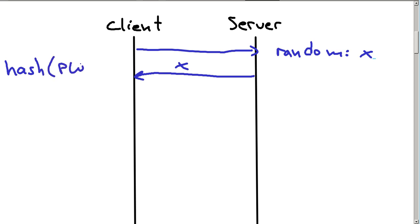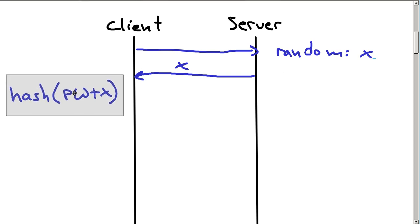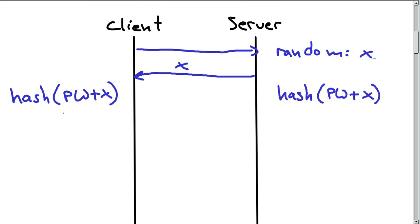Then what the client does is it calculates the hash value of the password plus x. Let's move this a little bit to the bottom here. In the same time, the server actually does the same. Let's say the client's result is y and the server's result is z. The client then sends the y back to the server, and the server checks is y equal to z.